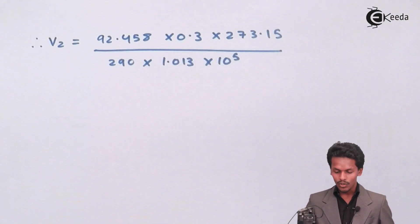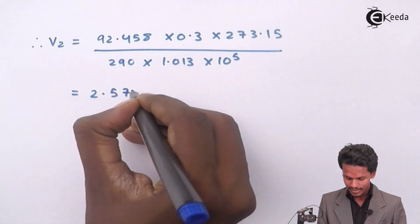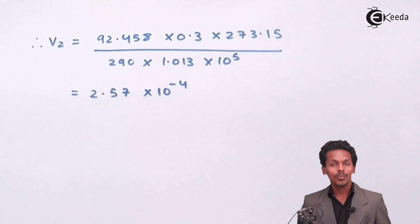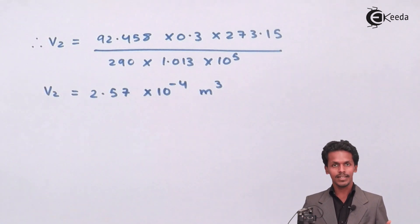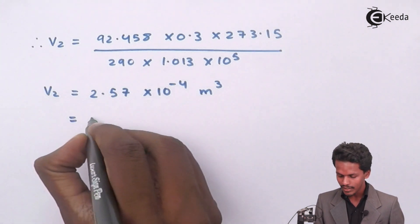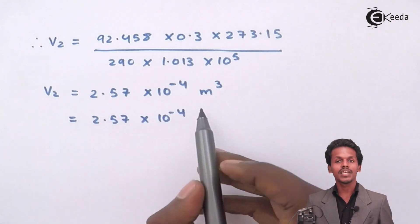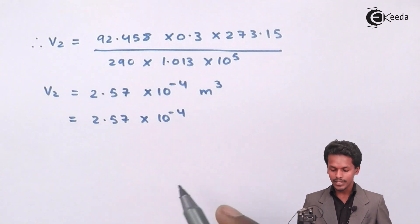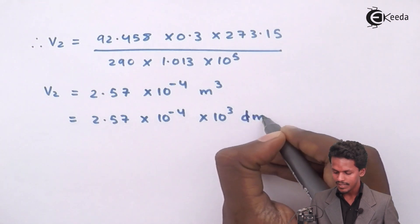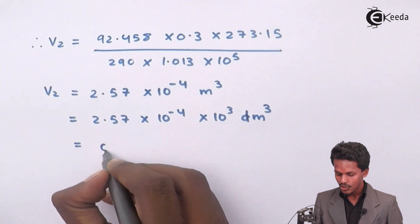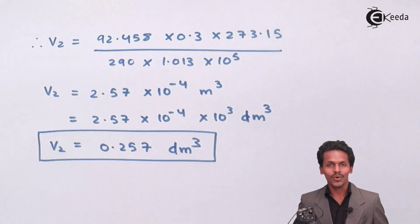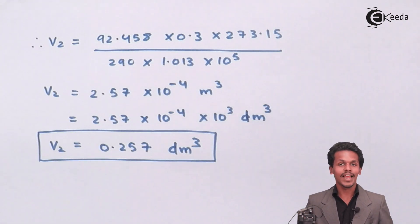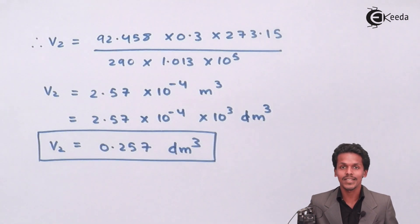Calculating this gives V2 = 2.57 × 10⁻⁴ cubic meters. This is the final volume at STP. Converting to dm³ by multiplying by 10³ gives 0.257 dm³. So this is the answer. It was very much related to the ideal gas equation. I hope you have understood how to solve this kind of numerical. Share this video with your friends and don't forget to subscribe to Ikeda channel. Thank you so much.